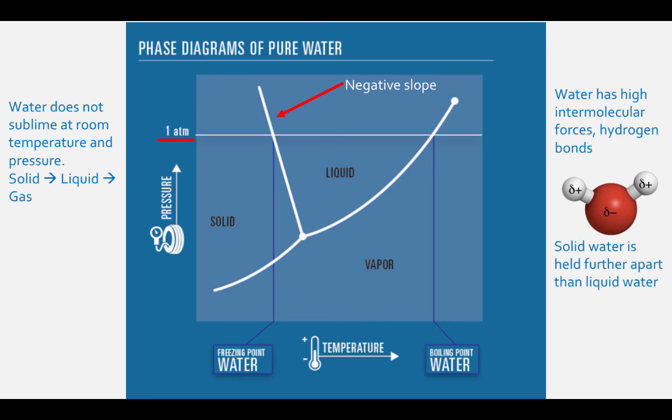Hydrogen bonding gives water some unusual properties. Solid water is held further apart than liquid water, because the hydrogen bonds have the strongest interactions when they are 200 picometers apart. Liquid water's molecules can get closer together because they're not held in such a rigid structure. This is the reason for the negative slope of the solid-liquid line in the phase diagram of water.